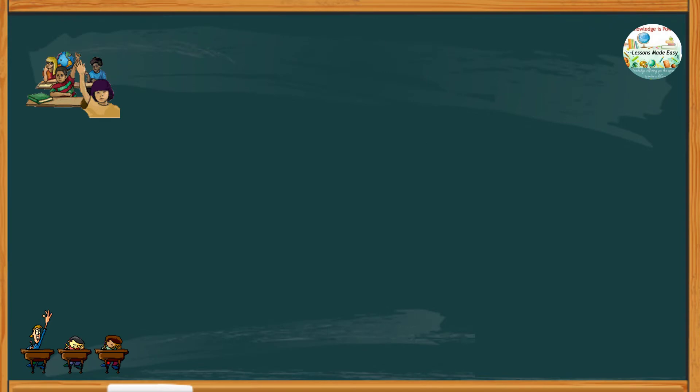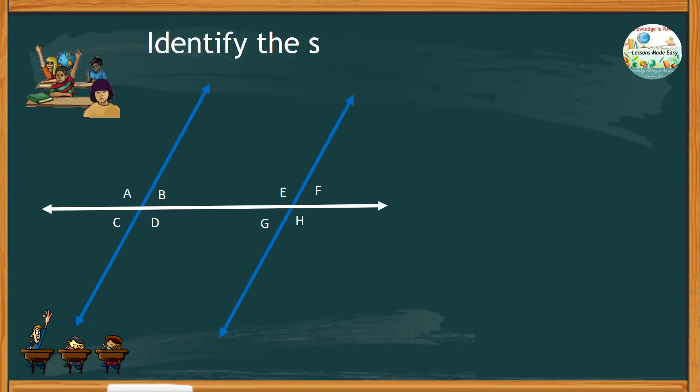Let's try and answer these short exercises. Study this figure and identify the size of angle F, angle G, and angle E if the size of angle B is 75 degrees.